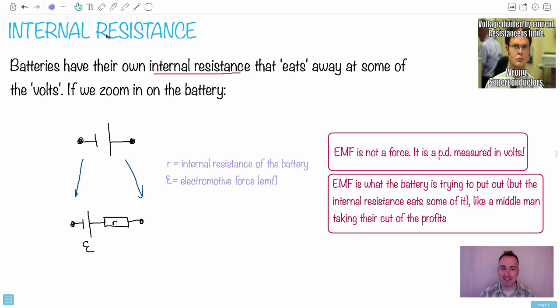We have internal resistance. That's because real-life batteries aren't ideal. They're not perfect. They have their own internal resistance. And the way I like to think of it, it's almost like it eats away some of the volts. Of course, we shouldn't say voltage, we should say electric potential. That's why I put it in quotations.